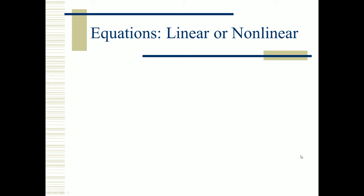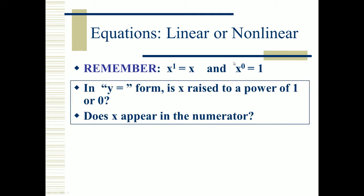Next, we look at equations to see if they're linear or nonlinear. Understand that x to the first power is just x, and x to the zero power is 1. The question to ask in the format y = x is: is x raised to a power of one or zero, and does x appear in the numerator? For example, y = x + 4: x is raised to the power of one and x is in the numerator, so this is linear — it's the standard equation y = mx + b, the equation of a straight line.